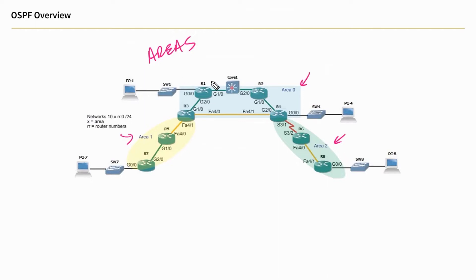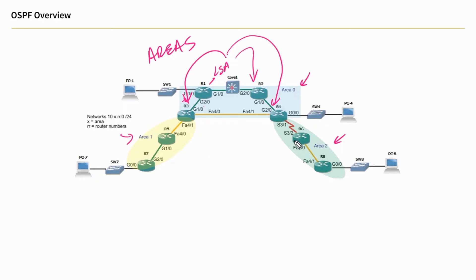In this topology we've identified area zero, area one, and area two. Going back to router one's LSA — which has information about his three connected networks — that LSA no longer has to go to every single other router in the entire topology. Instead, this LSA for R1 only has to be shared with other routers who are also in area zero. It doesn't have to be sent down to area two or area one. So R1's LSA is shared with R2, R4, and R3 — those are the only four routers in that area. Router five, six, seven, and eight never have to get a copy of it. The LSA for this router stays in the area — sort of like the Vegas thing: what happens in Vegas stays in Vegas.